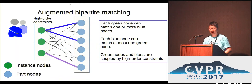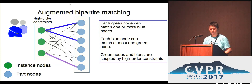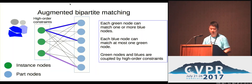Let's take a closer look at what this structure is like. On the left-hand side you will see some green nodes — these indicate the instance nodes, or instance candidates. On the right part, you will see the body part nodes — the blue nodes. Since we allow body parts to split and merge, the instance nodes can match to multiple part nodes, but each part node can only match to at most one instance node. However, this alone is not enough — it won't work without some kind of high-order constraints to couple more things together, both for the instance nodes and for the part nodes.